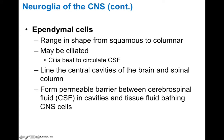Ependymal cells can range in shape from squamous to columnar and may or may not be ciliated. Those with cilia can beat to circulate cerebrospinal fluid around the brain, and they line the central cavities of the brain and spinal cord. Ependymal cells form a permeable barrier between cerebrospinal fluid and the ventricles, and the function of cerebrospinal fluid is to keep the brain buoyant and nourish it from the inside.